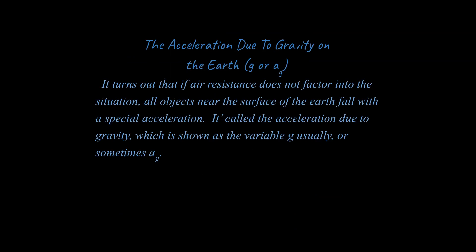Next up, something very important we need to talk about is the acceleration due to gravity on the Earth. So typically that's going to be written as a lowercase g or as an a sub g, like acceleration due to gravity. Just depends on your teacher. G may be slightly more common, but you should become familiar with both. It turns out that if air resistance does not factor into the situation, all objects near the surface of the Earth fall with a special acceleration. It's called the acceleration due to gravity, which is shown as the variable g usually, or sometimes a sub g. This value is 9.81 meters per second squared.